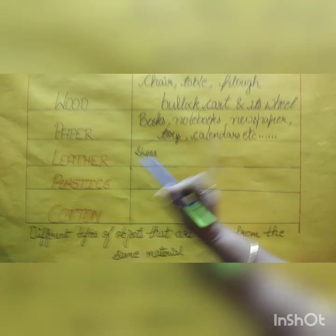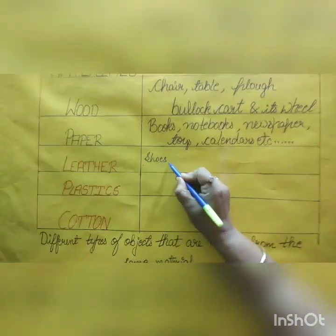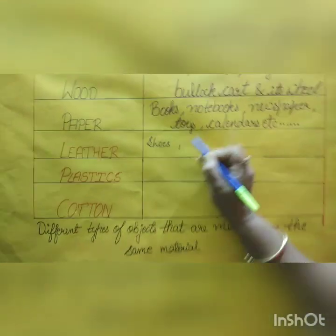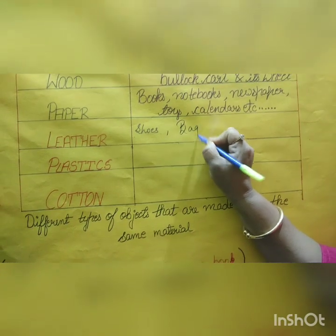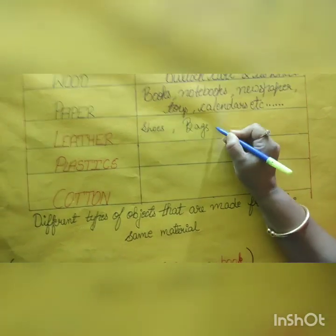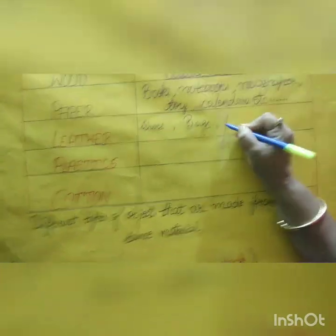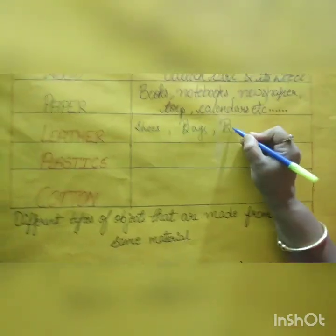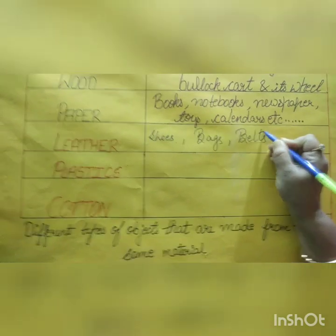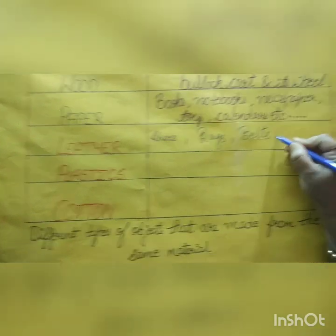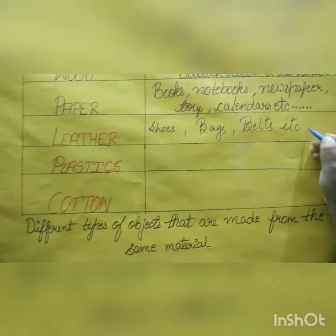Leather — one example can be shoes, another example can be bags, another example can be belts, and there are so many, so I am writing etc.